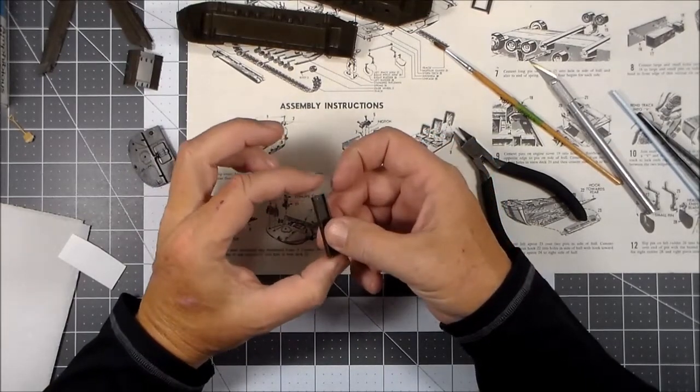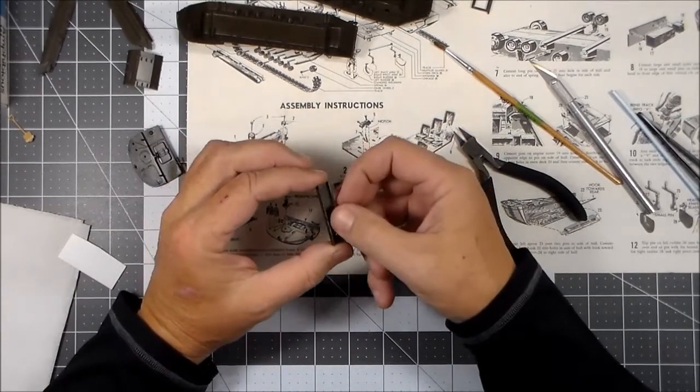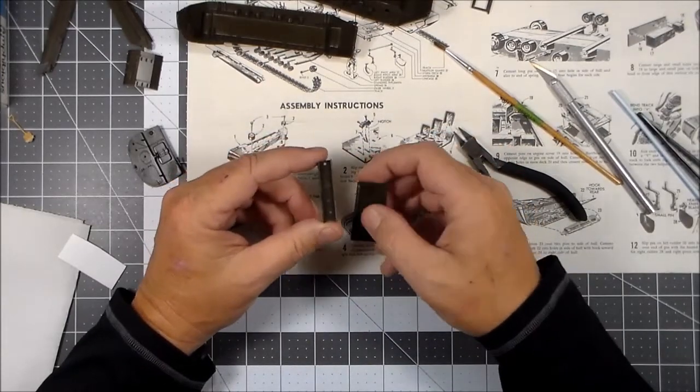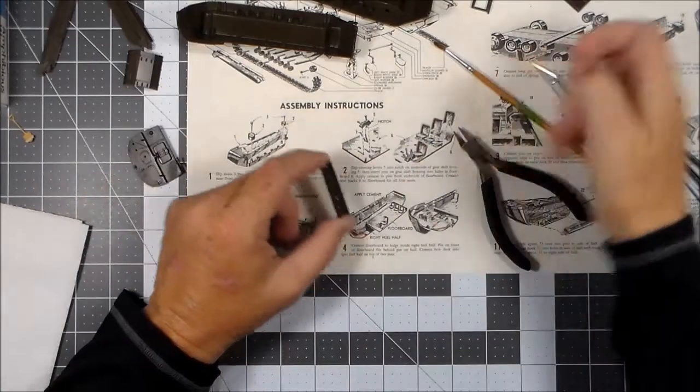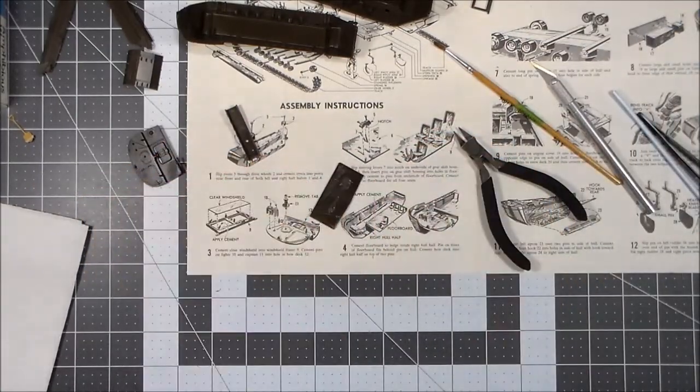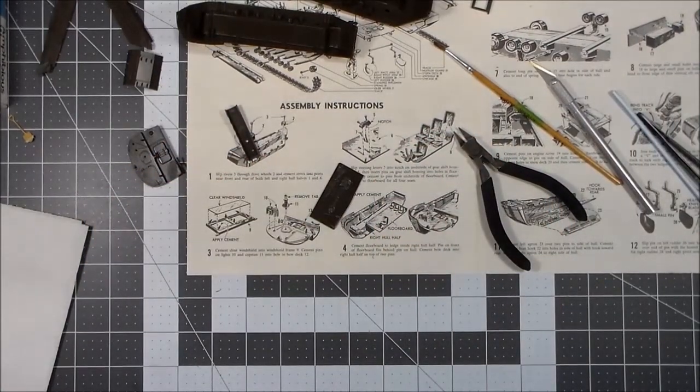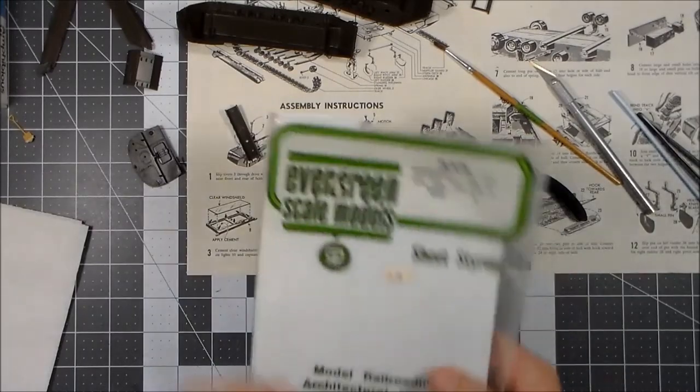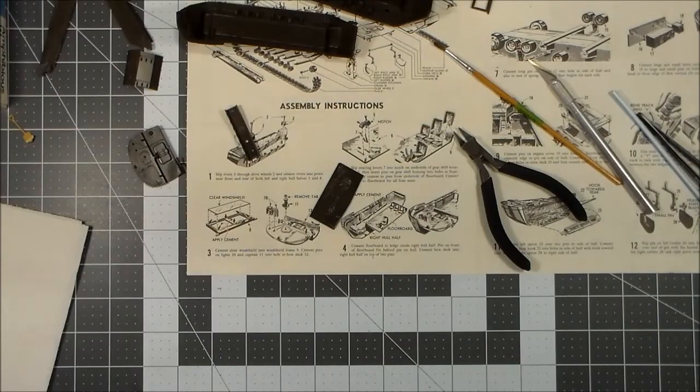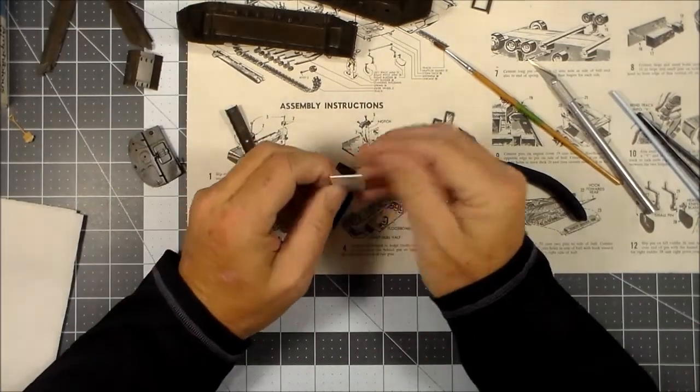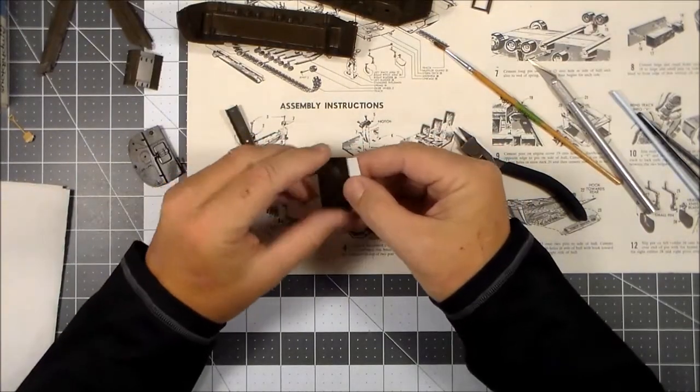So I wanted to use this because this is okay - it's got a good structure to it, doesn't have any details, so I didn't have to worry about repairing anything. So I'll discard that and using this as a template and using some Evergreen sheet styrene.